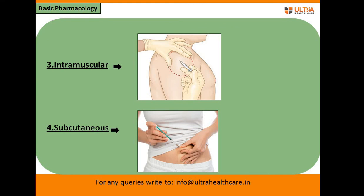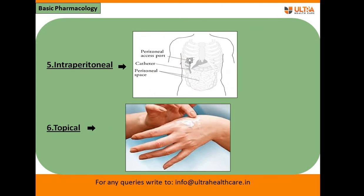Third is the intramuscular route, where the drug is administered directly into the muscle. Fourth is the subcutaneous route, where the drug is given between the skin and the muscle. Fifth is the intraperitoneal route, where the drug is administered within the peritoneum — a thin, transparent membrane that lines the wall of the abdominal cavity.